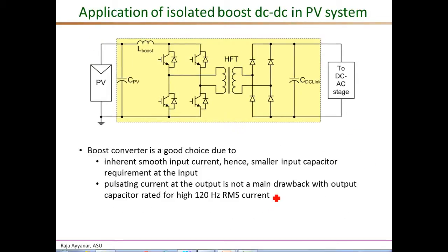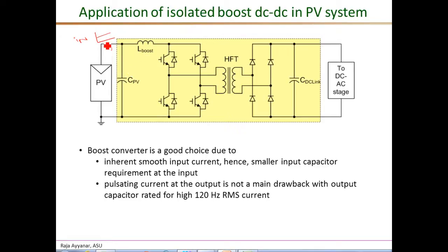A key advantage of the boost converter for this PV application is that it draws a smooth DC current from the PV source. Because of the inductor on the input side, the boost converter inherently draws a non-pulsating current — largely DC with only a small high frequency ripple. Therefore, the capacitance needed to filter this small ripple is very small compared to a buck-derived topology, where the input current is highly pulsating and requires a very large capacitor and additional filter inductor.